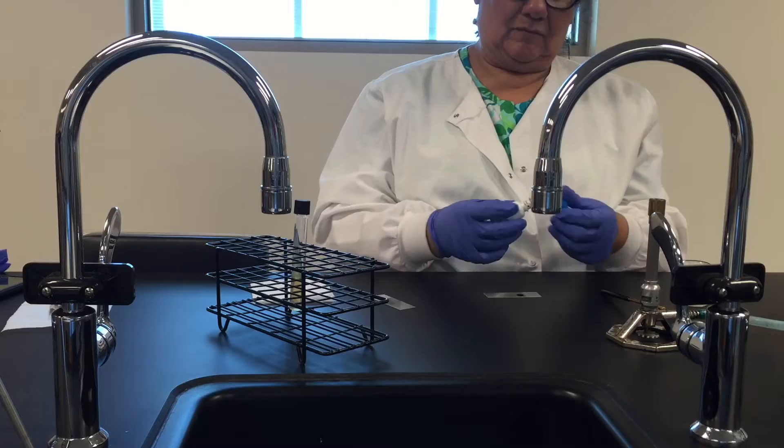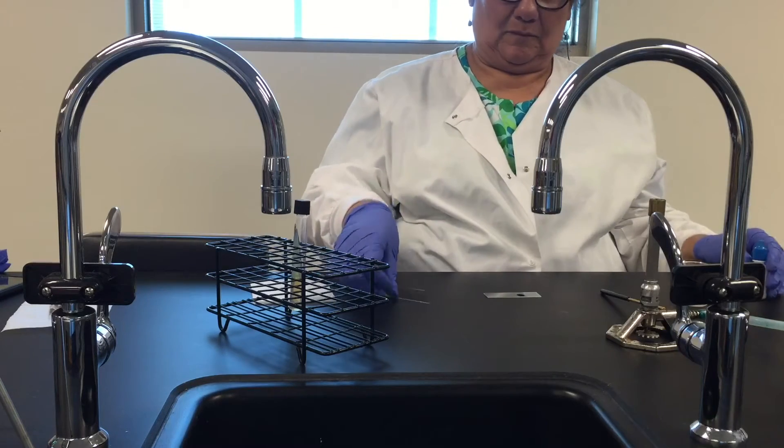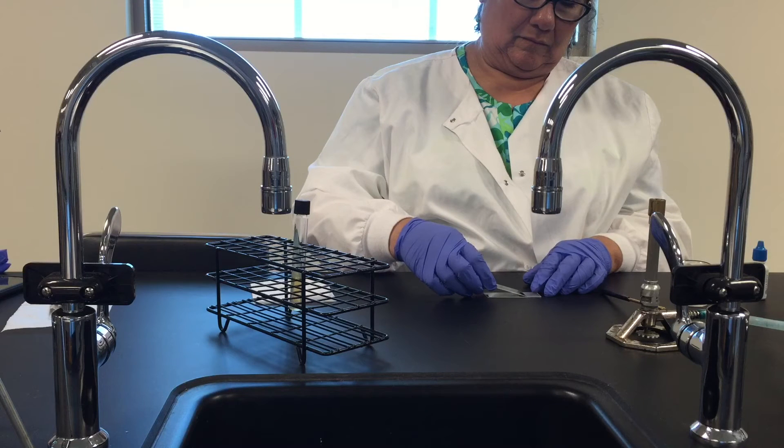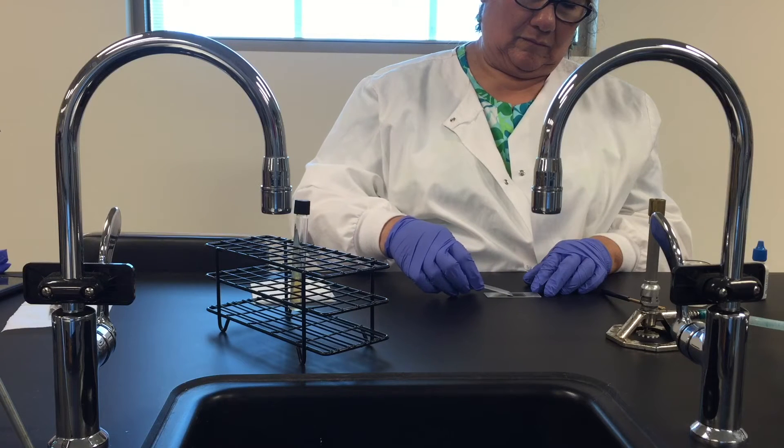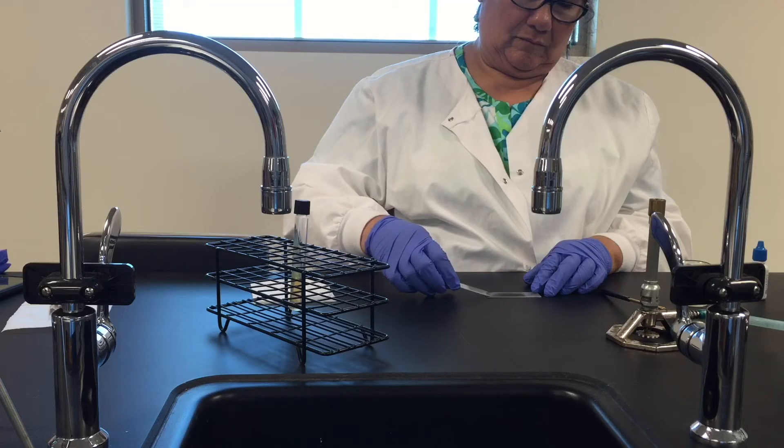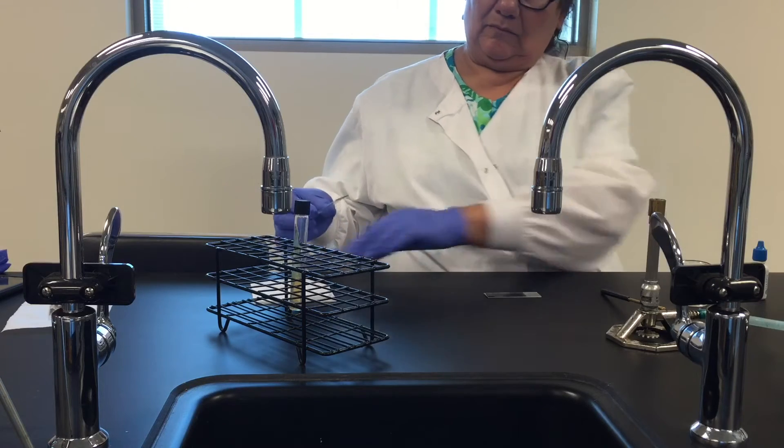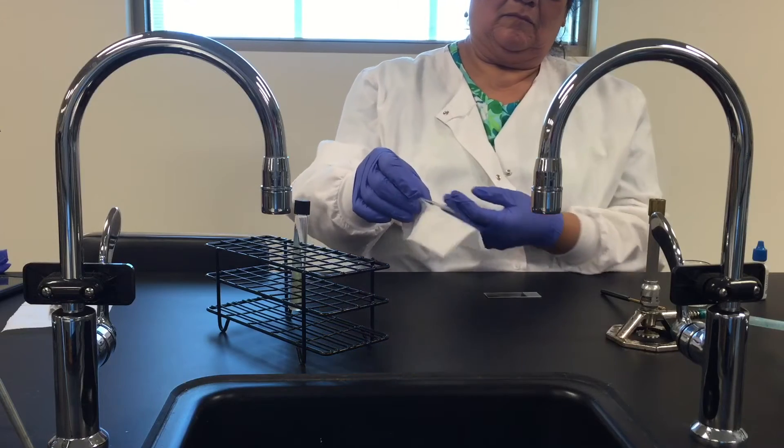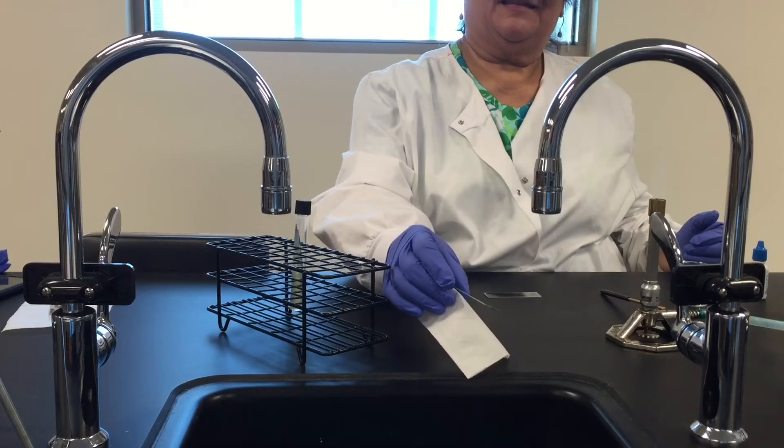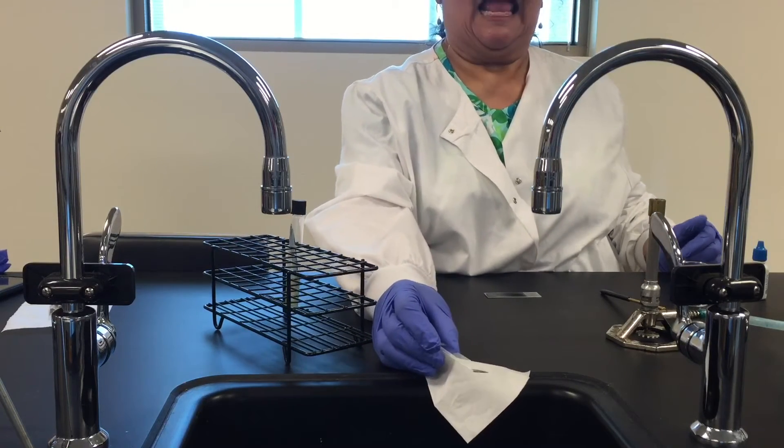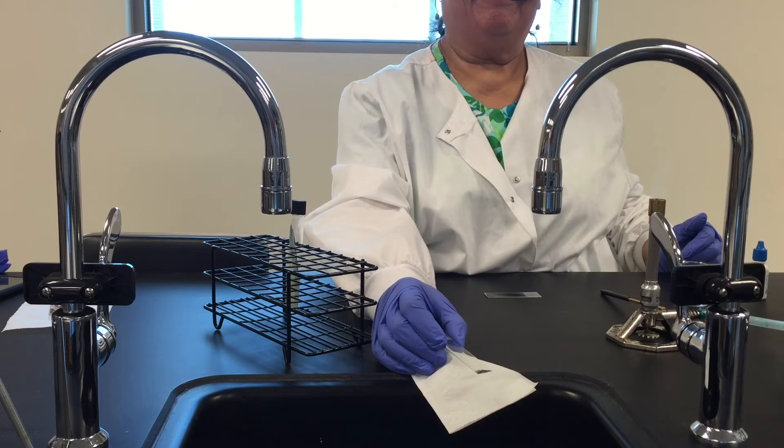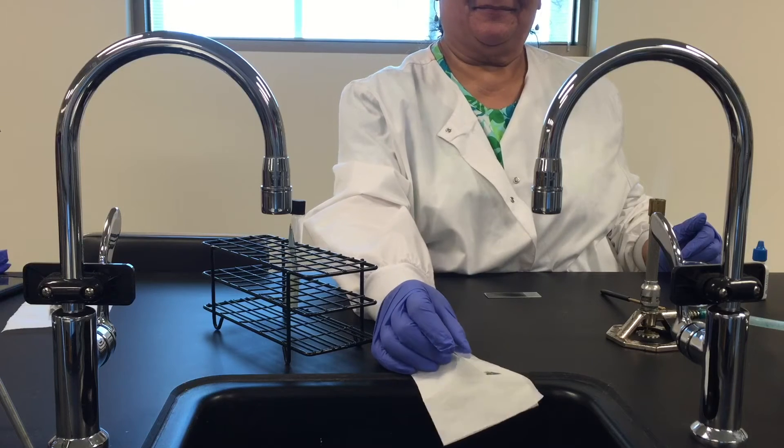Once we've done that we're going to pick up a second microscope slide and use it to drag that material across the entire surface of the slide. Now once you've done that you've got live microorganism on the end of that slide so you're going to give it a rinse with alcohol and then wash it. We don't happen to have any alcohol with us so we're just going to set it down in the sink for now.